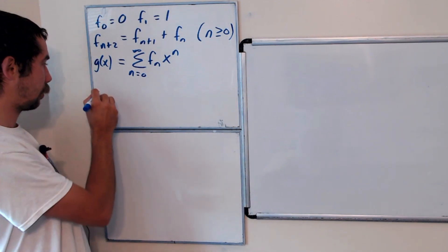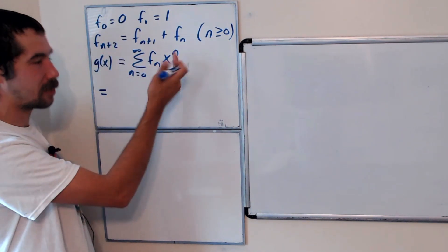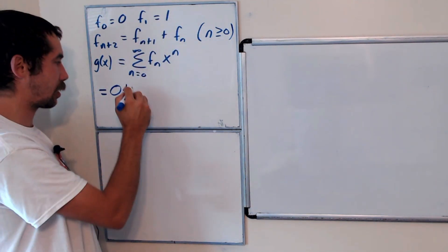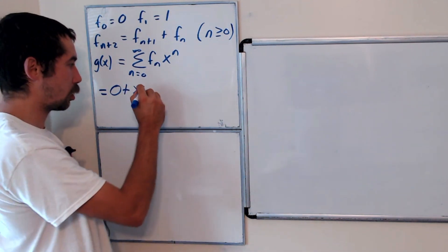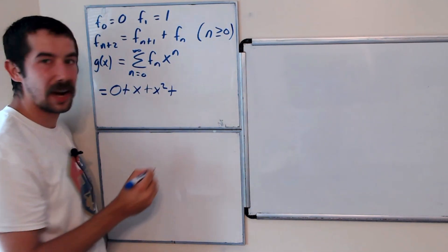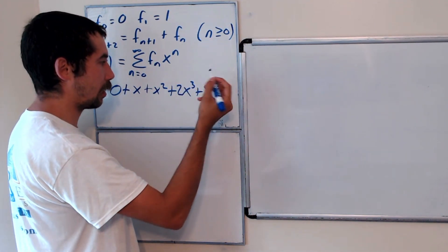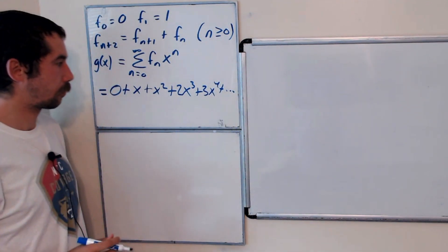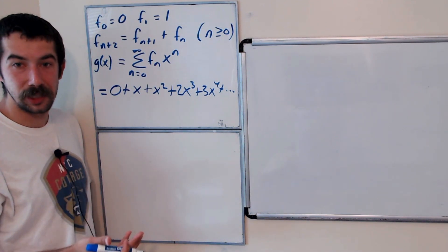What would this look like? The 0th Fibonacci number is 0, so it's 0 times x to the 0, that's 0, plus 1 times x to the first. The next Fibonacci number is also 1, so plus x squared. The next Fibonacci number is 2, the next one is 3, and so forth. So this is the generating function for the Fibonacci numbers.